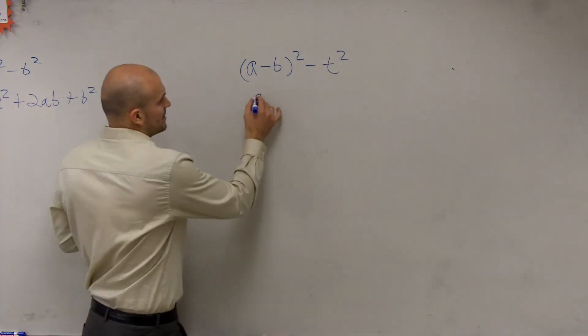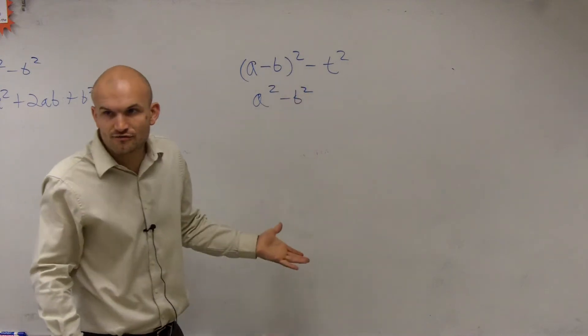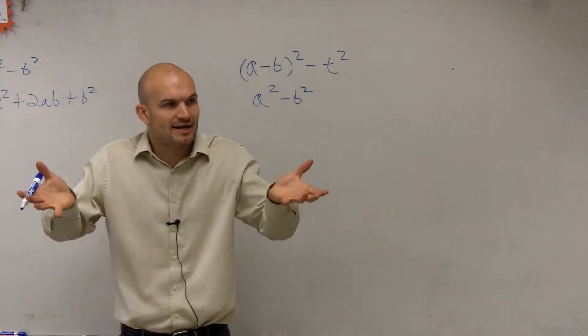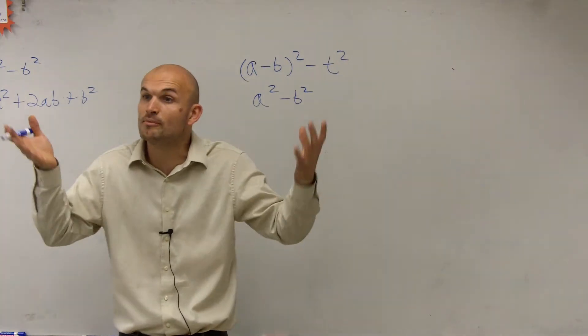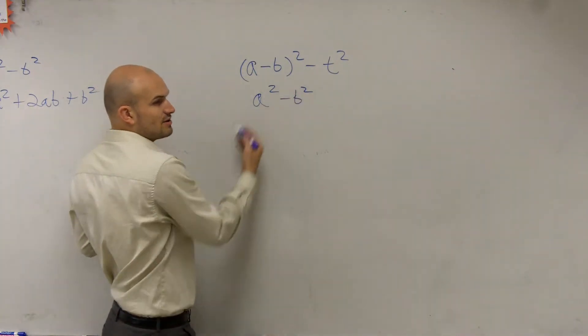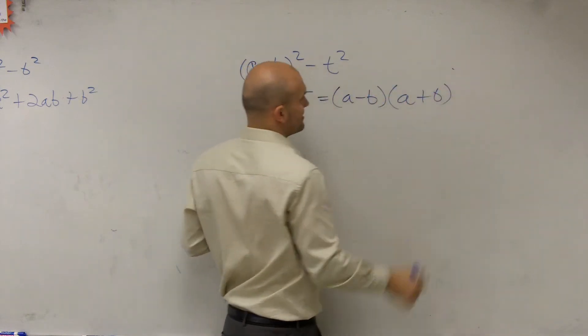The difference of two squares, ladies and gentlemen, if you have a squared minus b squared, the factored form, we already talked about when we multiplied a plus b times a minus b, we don't have to go through the whole FOIL method, because we know the middle terms cancel out. So a squared minus b squared equals a minus b times a plus b. That's your formula.